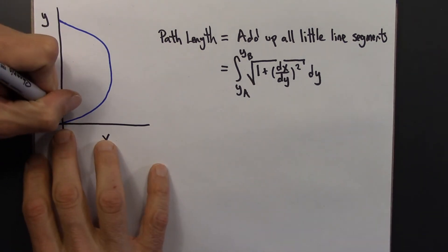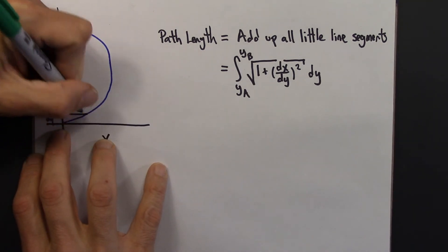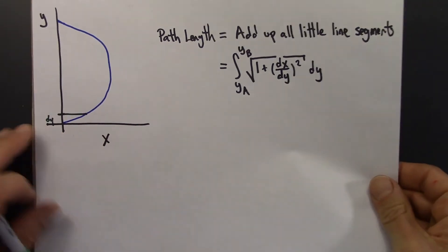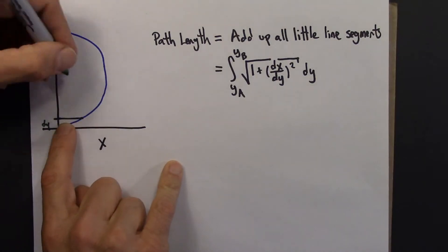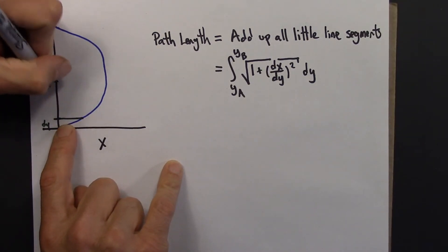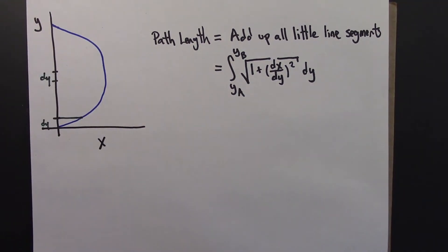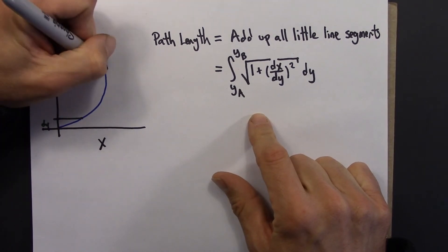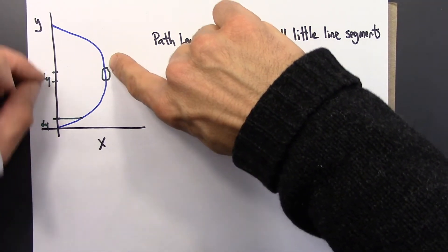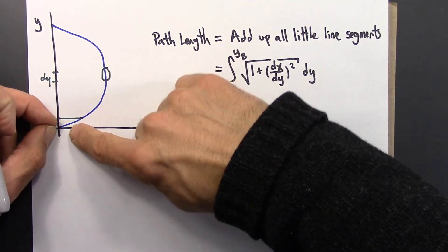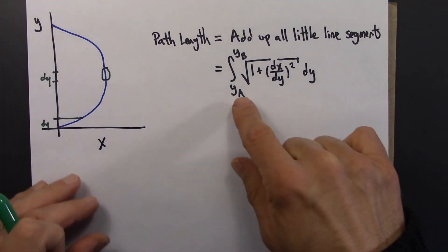Looking at the curve — take the first step dy along the y-axis. When we zoom in, that first blue hypotenuse is almost straight and it's quite long. But at a different point on the curve, there's almost no dx at all, so the line segment there is very short. The lengths of these line segments are changing as we add them up, and that's why we need to bring in calculus.